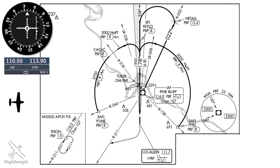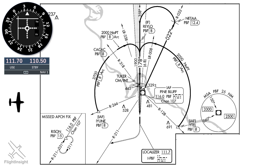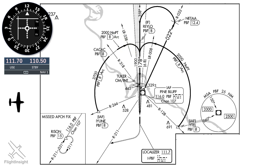Let's get our VOR set up. On NAV1, we'll tune to the localizer frequency. You could put this on NAV2 if you like, but I tend to prefer having the NAV aid we're actually using for the approach guidance on NAV1. That'll be the localizer, 111.7. We'll flip that active, and if we're within range of the signal, the needles will come alive. We'd want to ident this and any other NAV aid we're using, of course. The inbound course is 178, so we'll twist the OBS to that heading. Notice the needles aren't affected by us doing this.